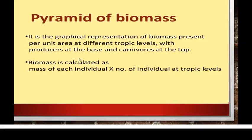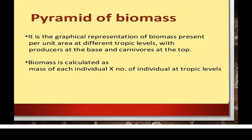The pyramid of biomass is the graphical representation of biomass present per unit area at different trophic levels — producers again at the base and carnivores at the top. It is calculated as: mass of each individual multiplied by the number of individuals at a trophic level. This gives the dry weight of all the matter in the organisms at a trophic level. The pyramid is constructed taking into view this biomass, which is the dry weight.